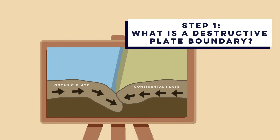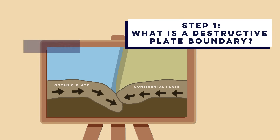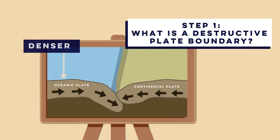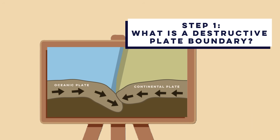A destructive plate boundary, also called a convergent plate boundary or a subduction zone, is where two tectonic plates meet and move towards each other. Usually it is a dense oceanic plate colliding with a less dense continental plate. Because the oceanic crust is denser, it gets forced down underneath the continental plate.